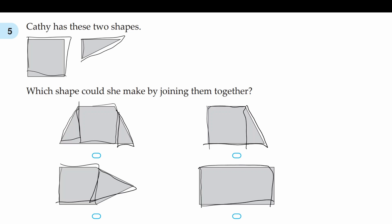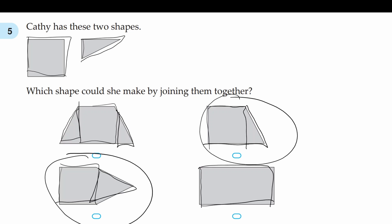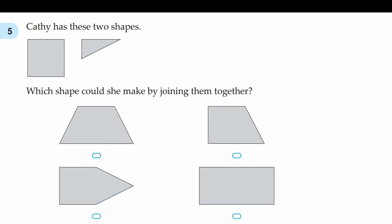You could say that this option and this option are both correct because they have a square and a triangle. But this is no ordinary triangle — we can see that this is a right-angled triangle because it has a right angle. And this triangle here is just a normal triangle because it doesn't have any right angles. This triangle we can see has a right angle here, which means that this is the correct answer.